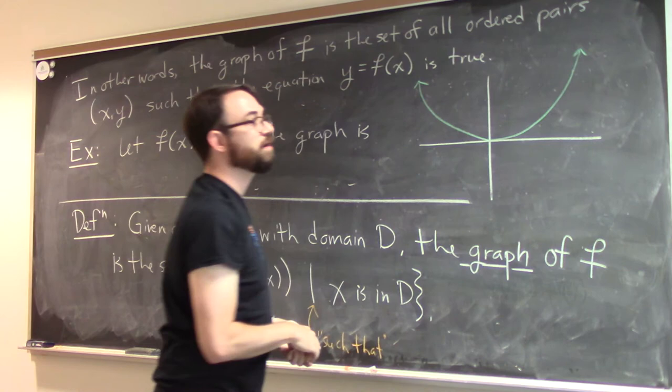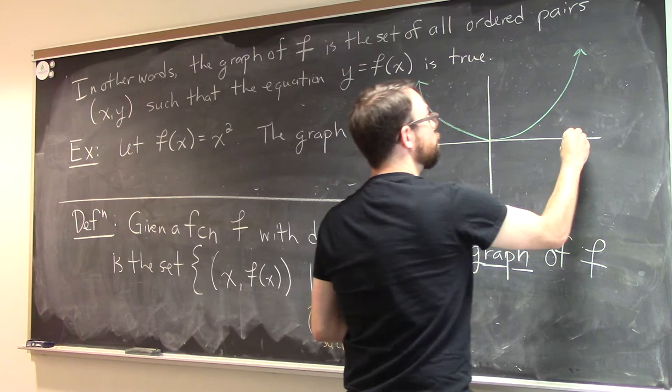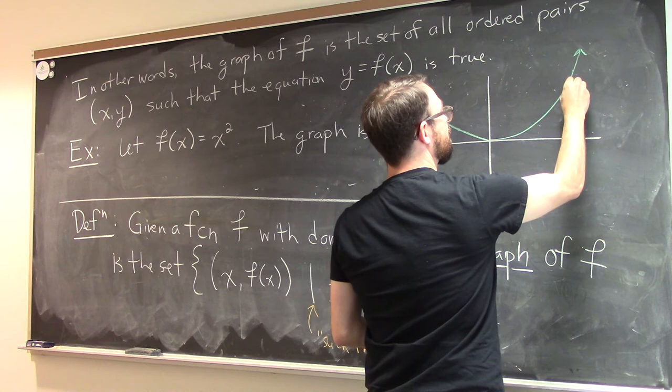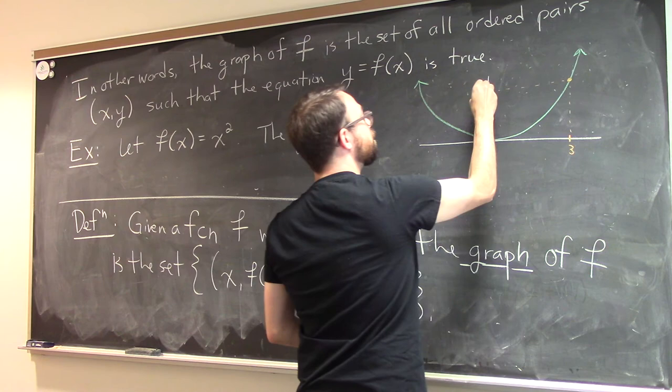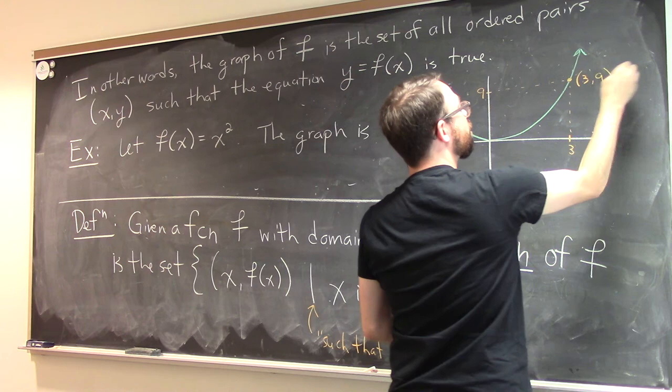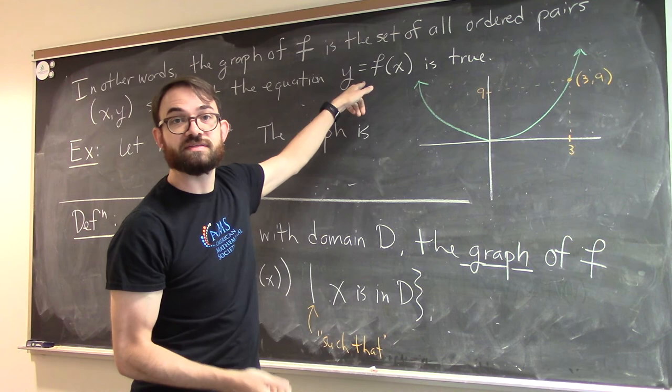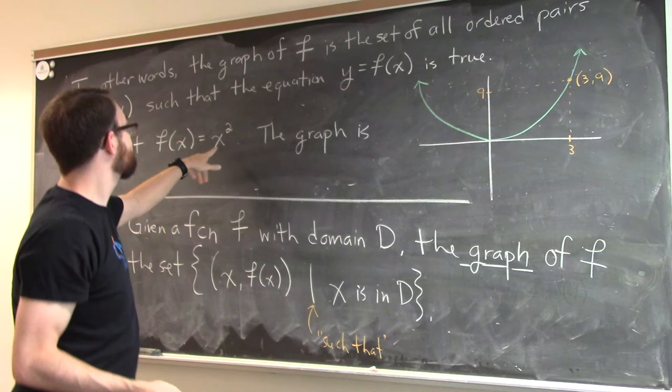And the idea is that, you know, if you choose some input value along the x-axis, this has some corresponding output value here. Now we know what this needs to be, it needs to be 9. And so the ordered pair, the ordered pair of 3 comma 9, lives on this graph. It's because it satisfies this equation for this specific function, right? If I plug in 3 for x, 9 for y, I get a true equation.